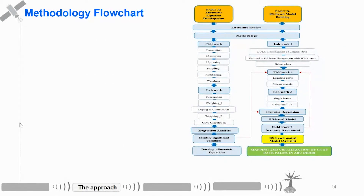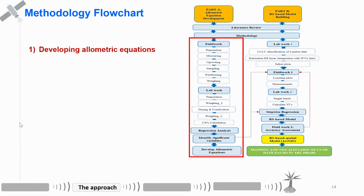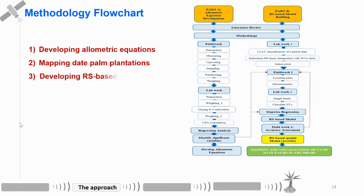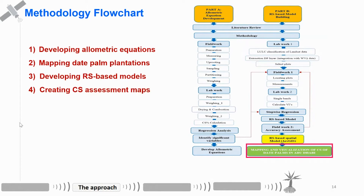Now we will come to the methodology. This is the whole flowchart — maybe a little bit complicated, but it can be simplified to four components. First, developing the allometric equation, because we have to work from scratch as there is no allometric equation for date palm. Then we have to map the date palm plantation at different age stages using Landsat and WorldView. Then, which is the heart of the work, developing remote sensing-based models and then creating the map and visualizing the carbon stock, biomass, and quantifier.